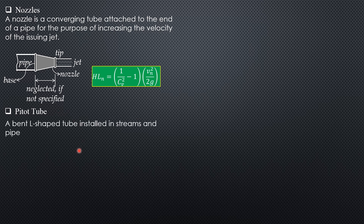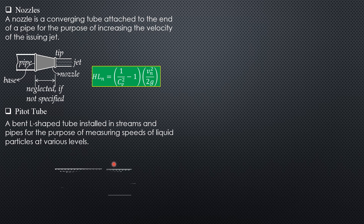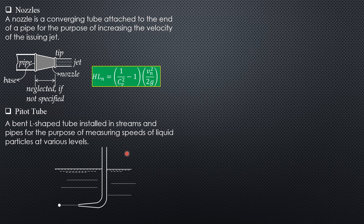Next is the Pitot tube. It is a bent, L-shaped tube installed in streams and pipes for the purpose of measuring the speeds of liquid particles at various levels. An early Pitot tube was installed near the bow of an airplane to measure the airplane's speed.